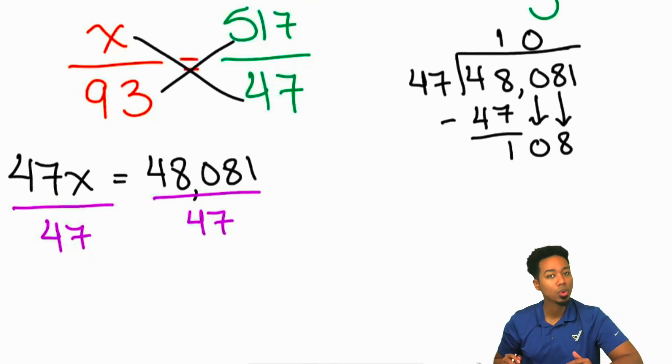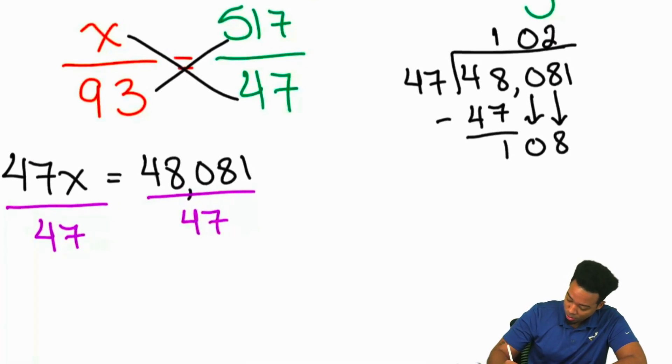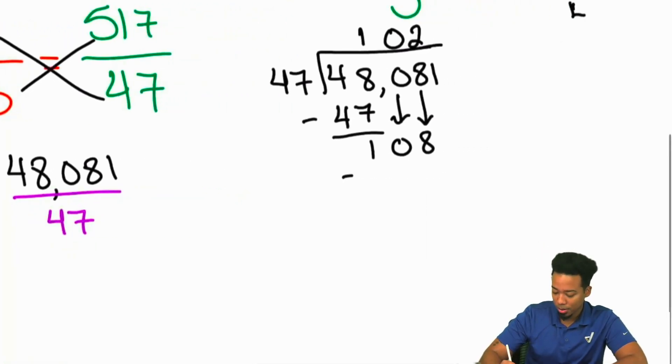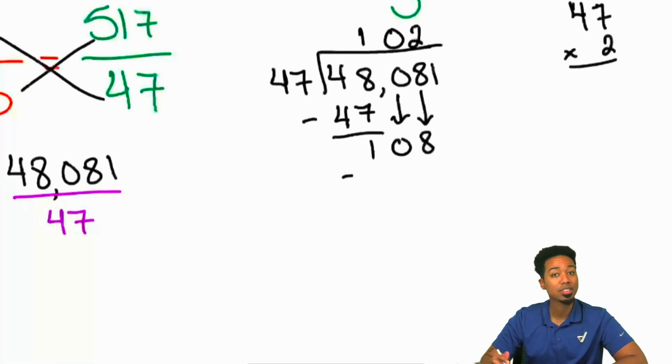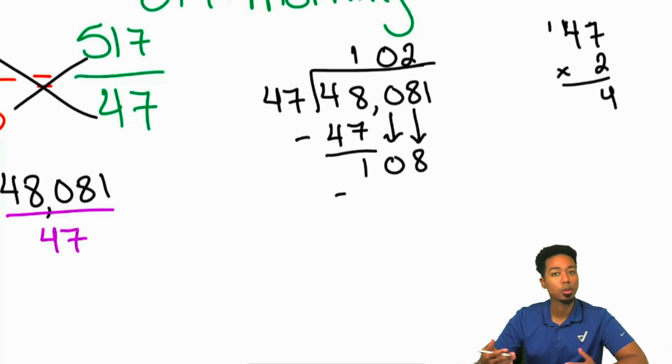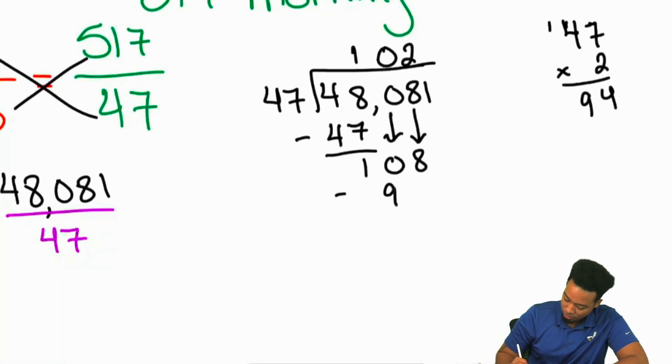Everyone, how many times does 47 go into 108? Twice. Sounds good. We'll place a 2 right there and we will go ahead and subtract. 47 times 2 is what everybody? If you need to write it down on the side, go ahead. But 47 times 2 is 94. 7 times 2, that's 14. 4 times 2, that'll be 8, and then carry the 1 is 9. So we have 94 being subtracted, leaving us with 14. And from there we're going to drop that 1.